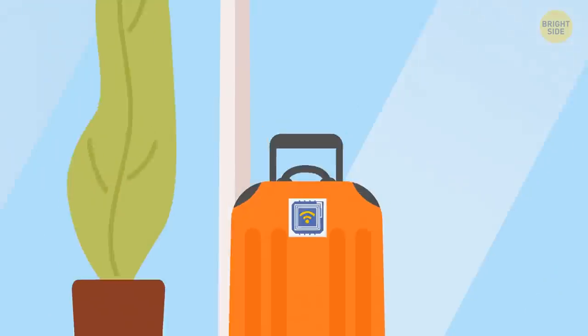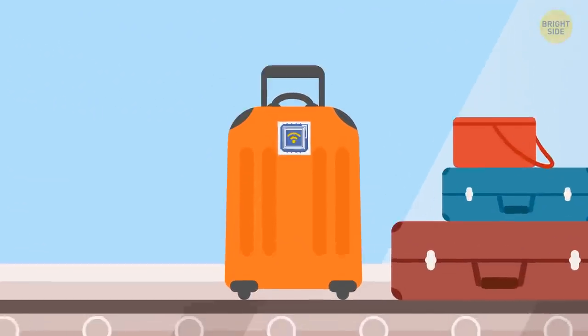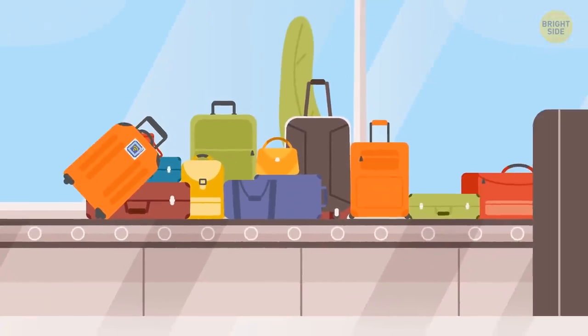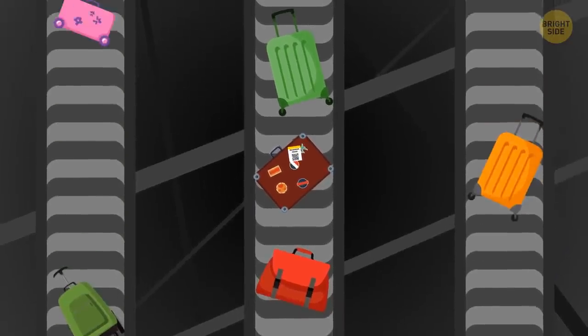Many airports and airlines use new technology with radio frequency identification chips to track your baggage in real time. This could help solve the problem of lost and delayed bags. Your suitcase disappears behind the rubber curtain. Now its epic journey on the conveyor belt begins.